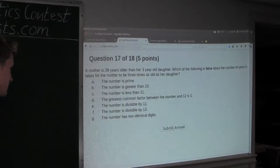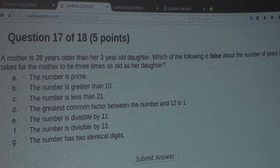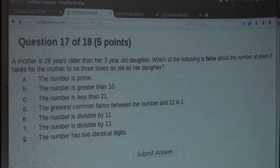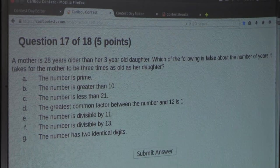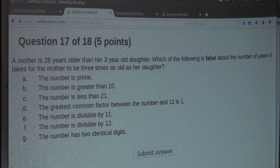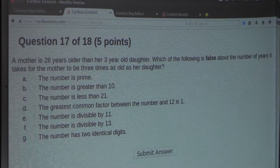So the question is, a mother is 28 years older than her 3-year-old daughter. Which of the following is false about the number of years it takes for the mother to be 3 times as old as her daughter?